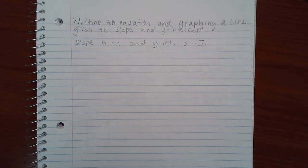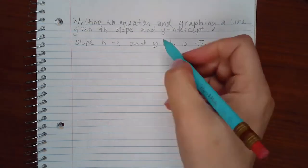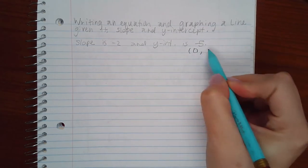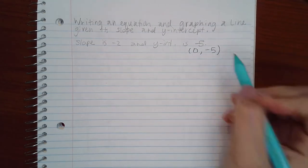This topic is writing an equation and graphing a line given its slope and y-intercept. Now remember, the y-intercept has coordinates. The coordinates are 0 for x and then this value for y.